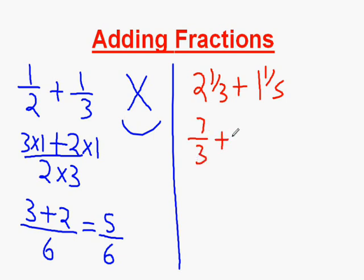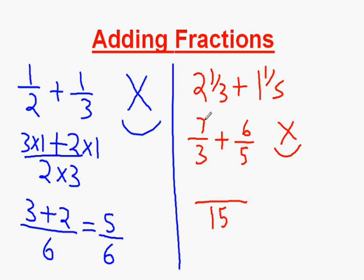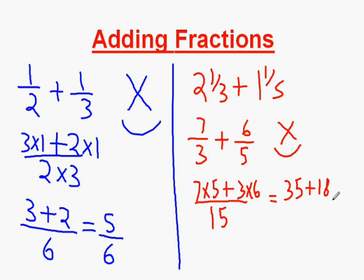We add it to 1 times 5 plus 1, which is 6 over 5. Now we use the same method of cross multiplying. We multiply 3 and 5 together to get the denominator, which is 15. And we multiply 5 and 7 together from the two fractions, and 3 and 6 from the other two to get 35 plus 18 over 15.